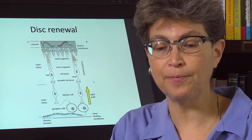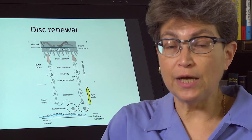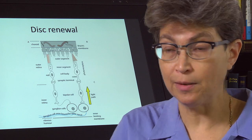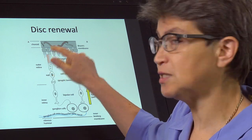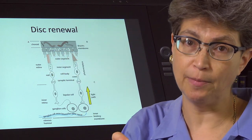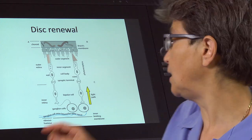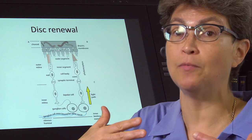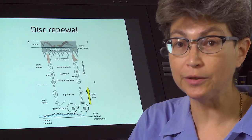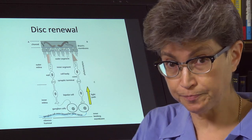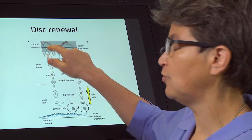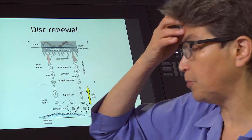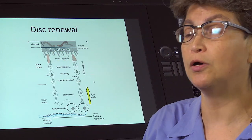So not only is the pigment epithelium re-isomerizing retinol so that you can see from moment to moment, but it's doing the cell biological job of taking out the trash, enabling you to make new discs, new and higher quality discs that don't have all that damage. So these discs have a very short lifespan, about 10 days, and it's the pigment epithelium that is going to renew them.